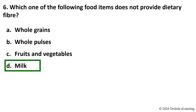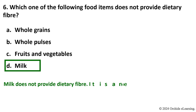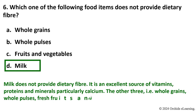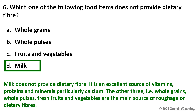Which one of the following food items does not provide dietary fiber? Answer: D — Milk. Milk does not provide dietary fiber. It is an excellent source of vitamins, proteins, and minerals, particularly calcium. The other three — whole grains, whole pulses, fresh fruits, and vegetables — are the main sources of roughage or dietary fiber.